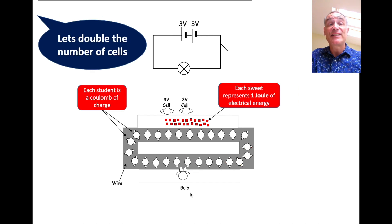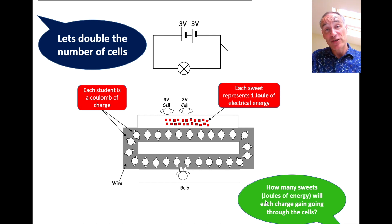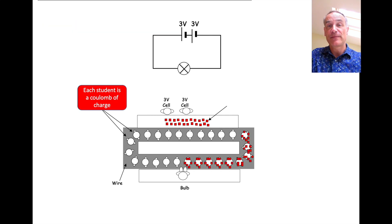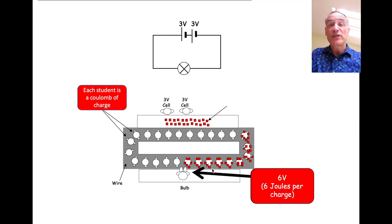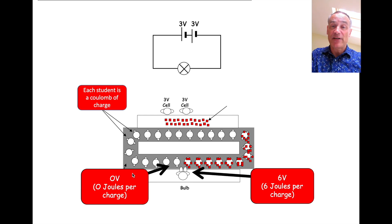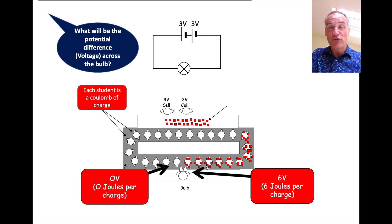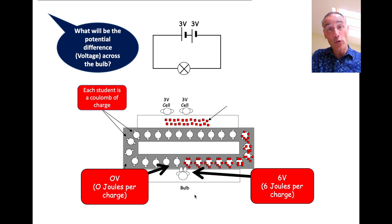Now what we're going to do is double the number of cells. How many sweets and how much energy will each charge get going through both cells? They're going to gain six joules each, which means the potential here is six volts and the potential here is zero volts - zero joules per charge. Which means if we put a voltmeter across the bulb, it's going to read six. Notice the voltage of the power supply adds up to the voltage around the circuit, and with only one bulb, it takes all of the energy.